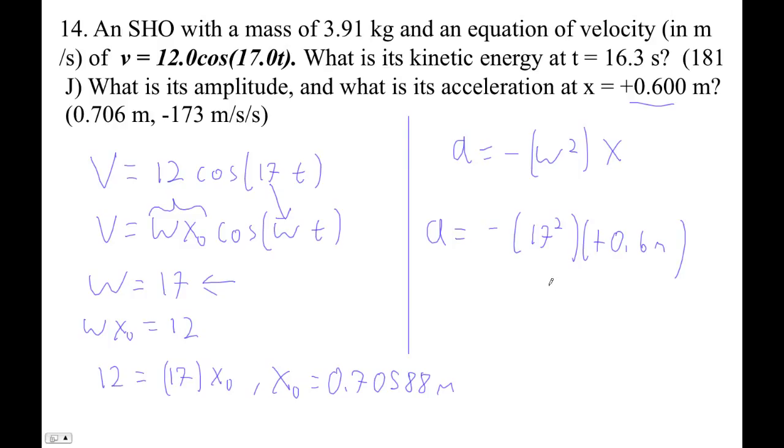So negative 17 squared times 0.6, negative 173.4 meters per second squared. Okay. And you know, well, why is it a negative acceleration? That's because this thing's oscillating back and forth. Its amplitude is 0.7, we'll say 0.71, 0.706, right? So positive 0.706, negative 0.706, here's the center.